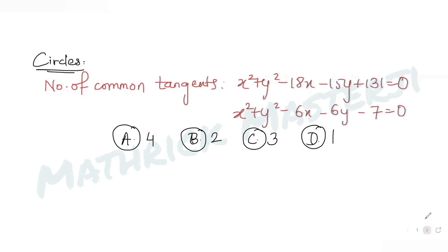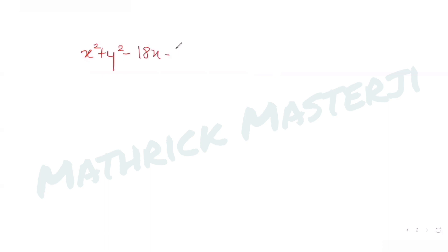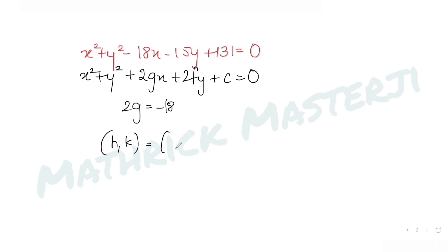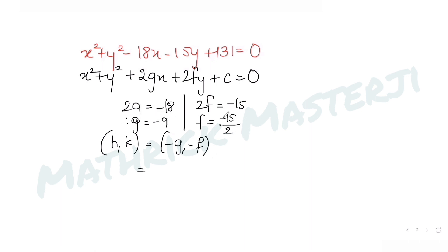The first equation of the circle is x² + y² - 18x - 15y + 131 = 0. I compare it with the standard form x² + y² + 2gx + 2fy + c = 0. From here I get 2g = -18, so g = -9, and 2f = -15, so f = -15/2.